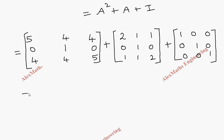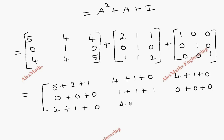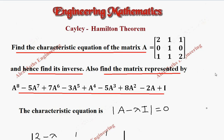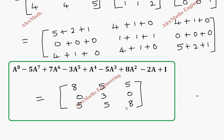Making everything a single matrix: 5 plus 2 plus 1; 4 plus 1 plus 0; 4 plus 1 plus 0; then 0 plus 0 plus 0; 1 plus 1 plus 1; 0 plus 0 plus 0; then 4 plus 1 plus 0; 4 plus 1 plus 0; 5 plus 2 plus 1. So finally the matrix represented by the expression is: 8, 5, 5; 0, 3, 0; 5, 5, 8.